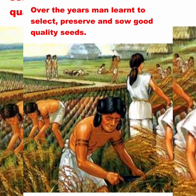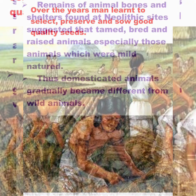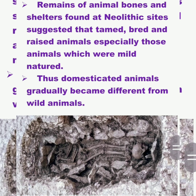Over the years, man learned to select, preserve, and sow good-quality seeds. Remains of animal bones and shelters found at Neolithic sites suggest that people tamed and raised animals, especially those that were mild-natured. Thus, domesticated animals gradually became different from wild animals.